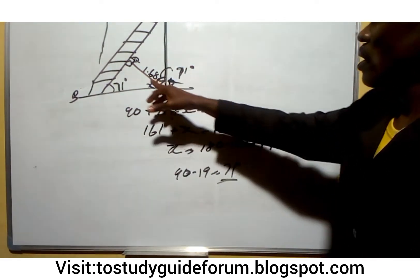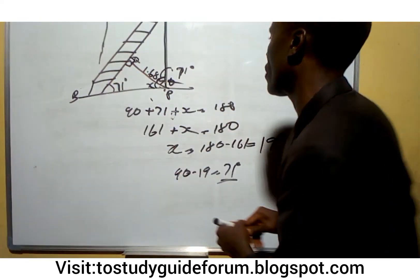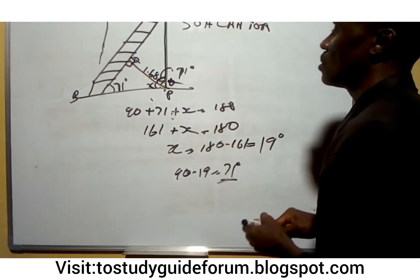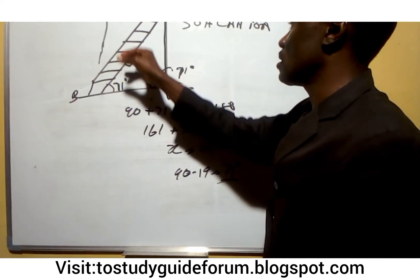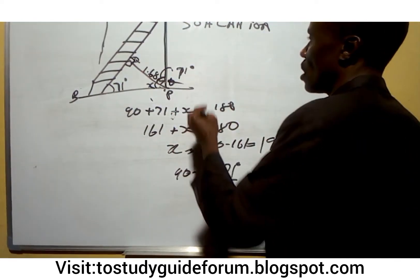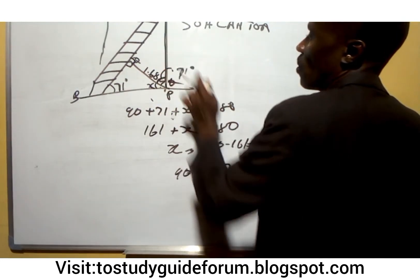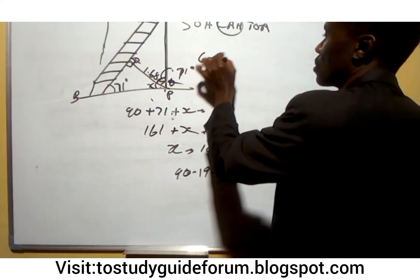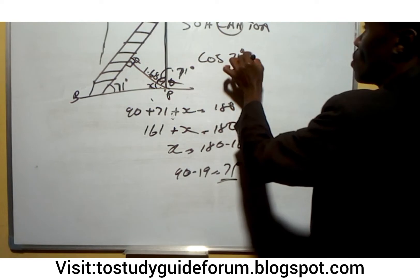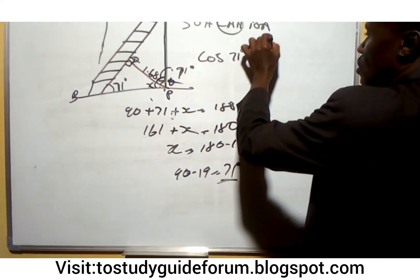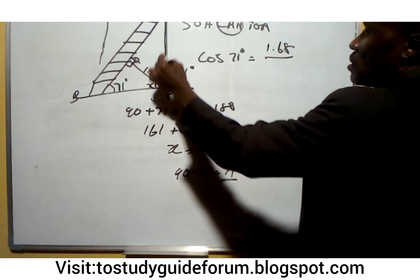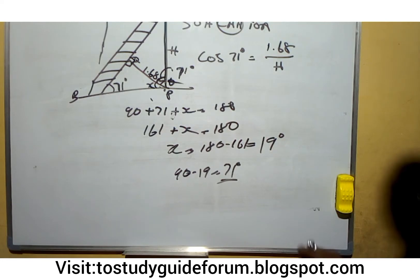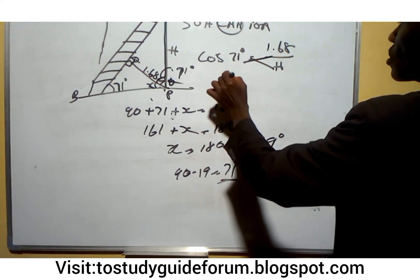To get the work done, we have this place. We can use our trigonometry. Looking at this, we have this place to be our adjacent, this is opposite, this is the hypotenuse. We have adjacent, we are looking for the hypotenuse. So we can go for cosine. If we are going for this, what we have should be cosine 71 equal to this other one which is 1.68 over what, this place that we are looking for. We can call it H.